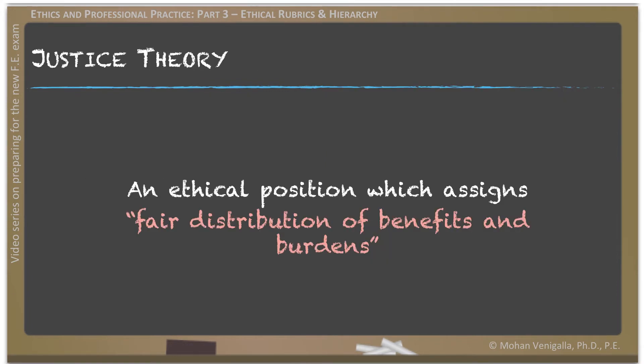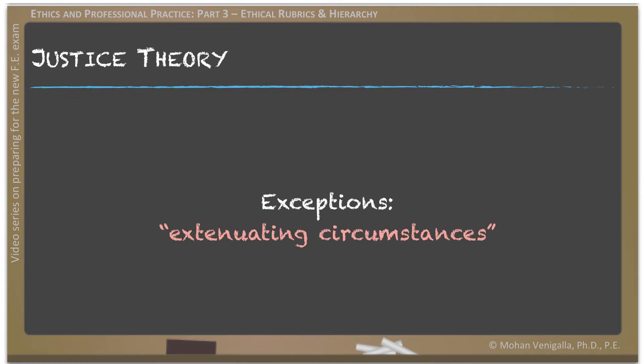Under justice theory, fair distribution of benefits and burdens means everybody is equal before justice, unless there are justifiable extenuating circumstances. This justification should be based on a consistent logical basis. For example, a policeman has to drive under the speed limit like everybody else under normal circumstances, but is allowed to speed to arrive at a scene of crime to prevent crime, apprehend a criminal, or save lives — provided he notifies dispatch and turns on the siren while speeding.